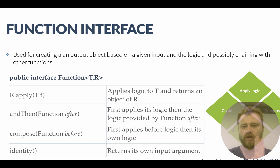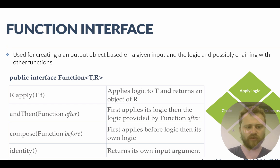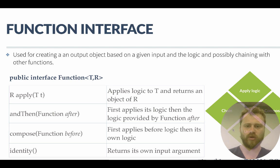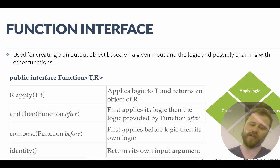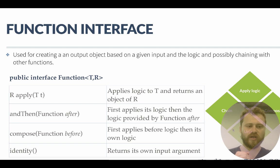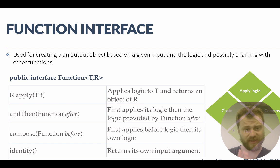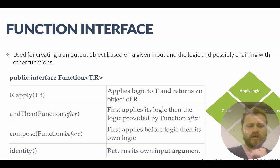The Function interface has four main methods: apply, andThen, compose, and identity. In a previous video I said a functional interface has only one method — the key is that it has only one abstract (executive) method, which is apply. The other methods are used for chaining or composing functions according to functional programming principles, but they don't do the core data processing.